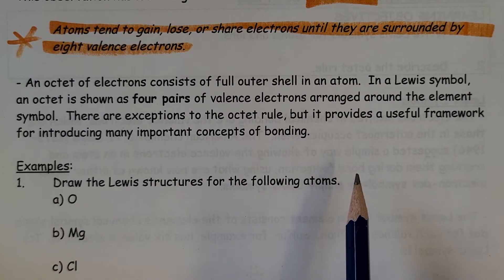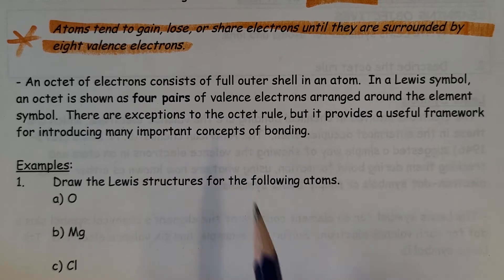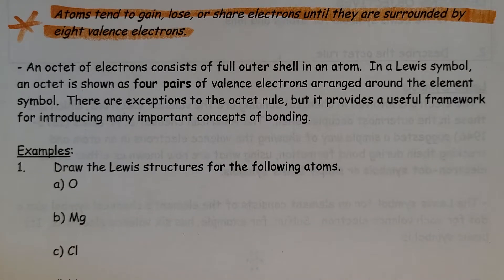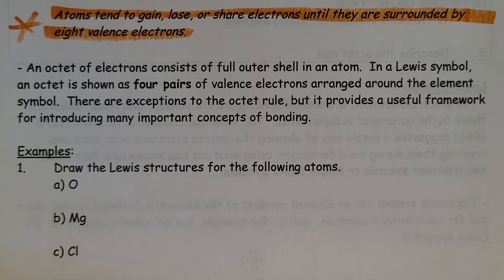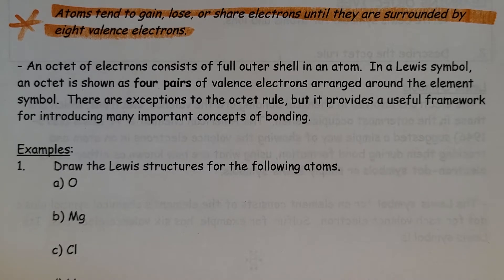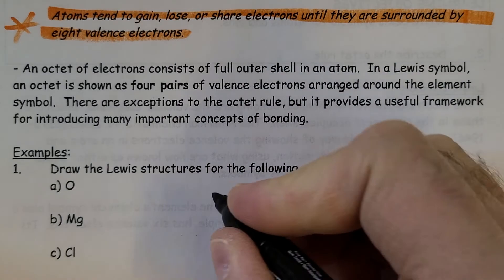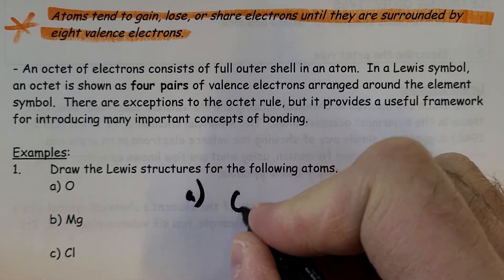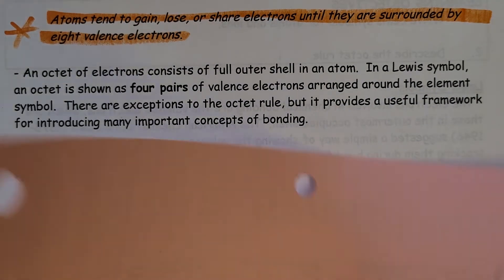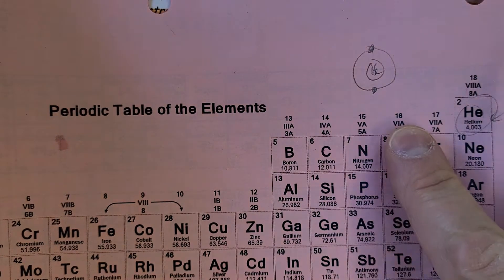There are exceptions to the octet rule, as we'll see, but it provides a useful framework for introducing many important concepts of bonding. If we do a couple of examples, draw the Lewis structures for each of the following atoms. If we look at oxygen, I'm just going to redraw it over here just so it's bigger.